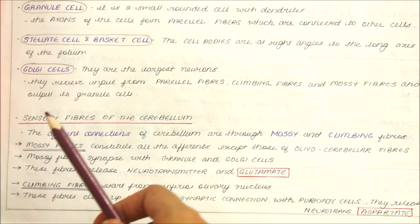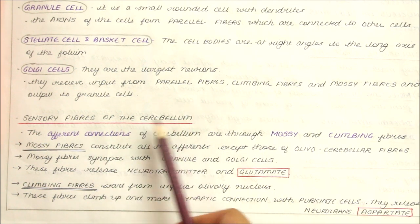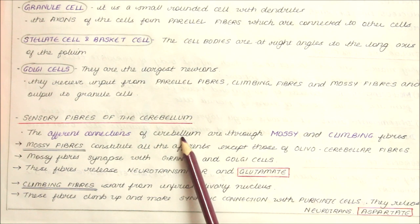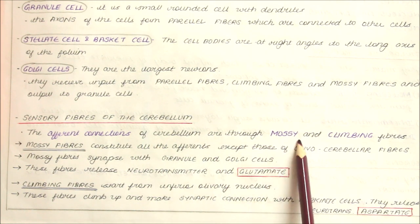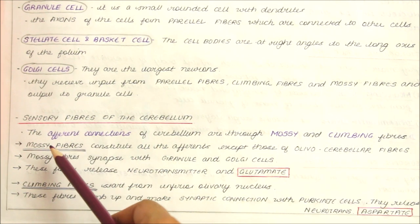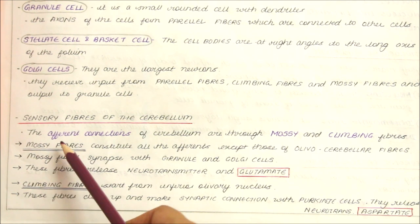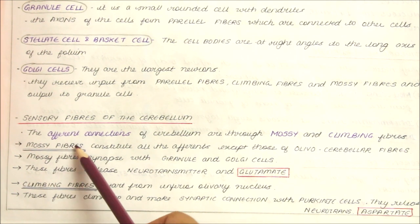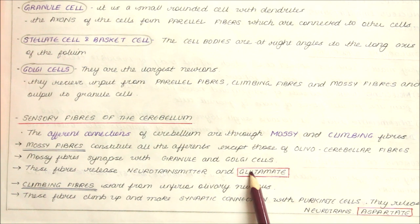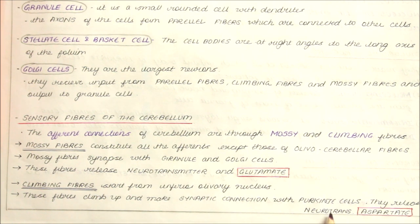Mentioning the sensory fibers of the cerebellum: the afferent connections of the cerebellum are through mossy and climbing fibers. The mossy fibers release the neurotransmitter glutamate, while the climbing fibers release the neurotransmitter aspartate.